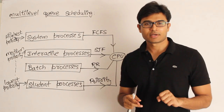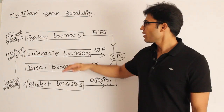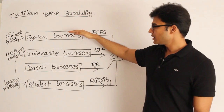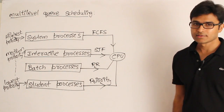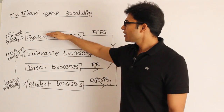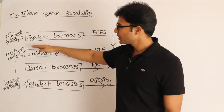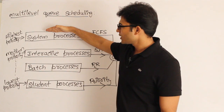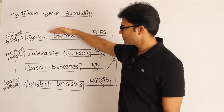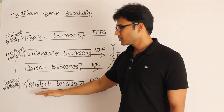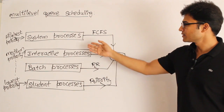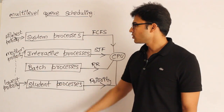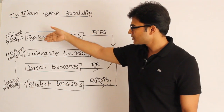With so many types of processes, we cannot put them all in one queue and apply one scheduling algorithm. Instead, we use multi-level queue scheduling. This means we have various levels of queues — one level has the highest priority, and priority decreases with each subsequent level. Processes at the highest level have the highest priority, and processes at the lowest level have the lowest priority. System processes get the highest priority and student processes get the lowest.